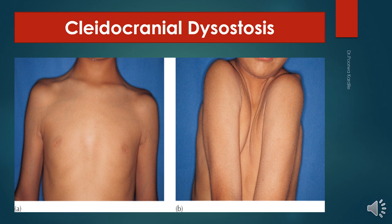The clavicle is typically poorly developed or absent, which allows the shoulders to be brought close to each other. There is cranial deformity as well as other prominent symptoms: prominent forehead, wide-set eyes, abnormal teeth, flat nose. It is caused by defective intramembranous ossification.